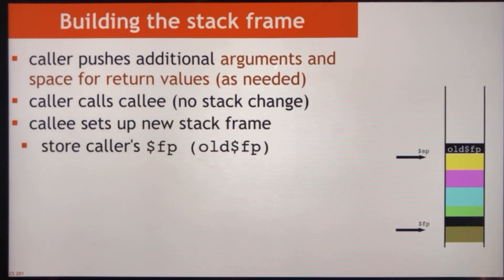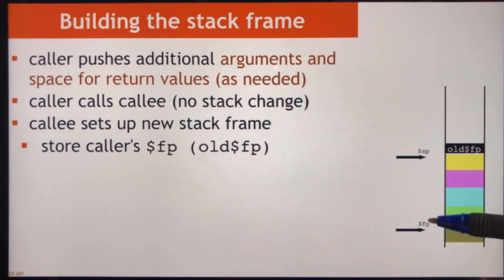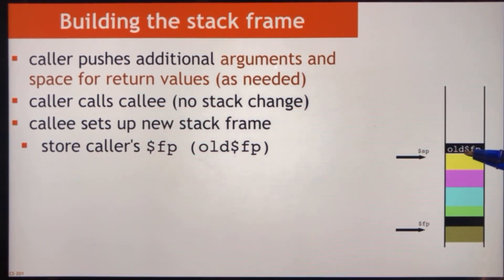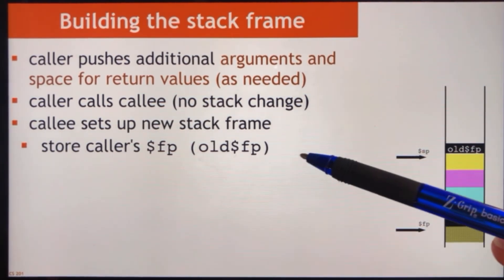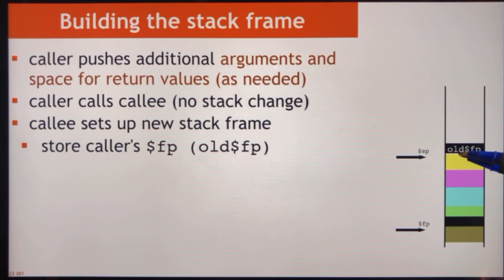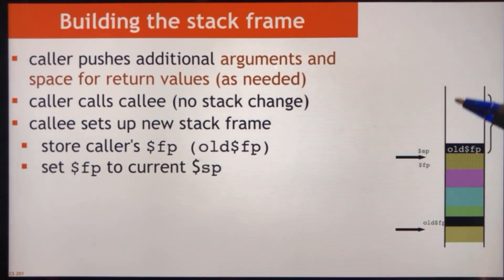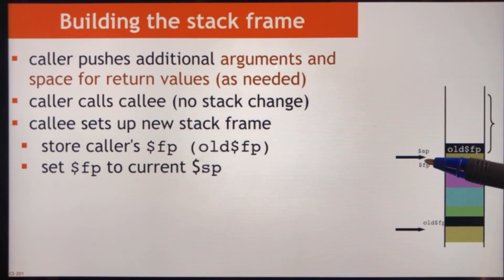Now we have to set up the new stack frame for this procedure. First, we put a new value into the frame pointer — but before we do that, we store the old frame pointer value on the stack so we can get back to the previous frame. We store the caller's frame pointer value, then set up a new frame pointer by setting it equal to the current stack pointer. That initiates the new frame and everything we do will be above that.